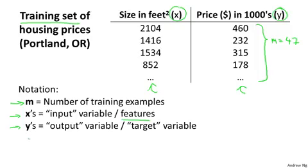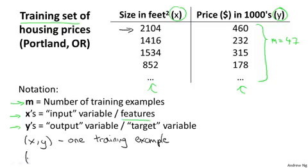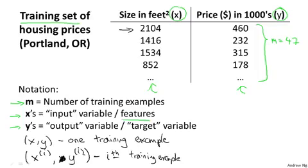A little bit more notation. I'm going to use (x, y) to denote a single training example. A single row in this table corresponds to a single training example. And to refer to a specific training example, I'm going to use this notation x^(i), y^(i). I'm going to use this to refer to the i-th training example. This superscript i over here—this is not exponentiation. x^(i), y^(i), the superscript i in parentheses, that's just an index into my training set and refers to the i-th row in this table. This is not x to the power of i, y to the power of i. Instead, x^(i), y^(i) just refers to the i-th row of this table.